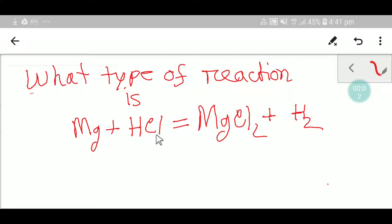Hello everyone, today we are going to know about the type of reaction. This is magnesium, this is hydrochloric acid, this is magnesium chloride, and this is hydrogen. Let me first balance this equation. Here we have one hydrogen, but here we have two.